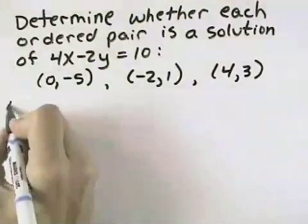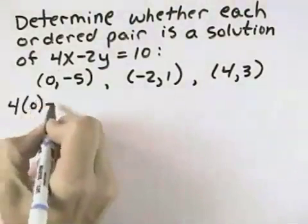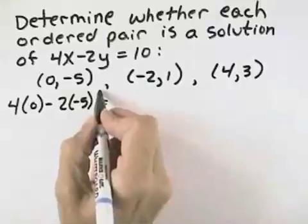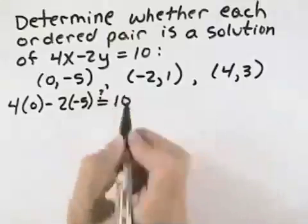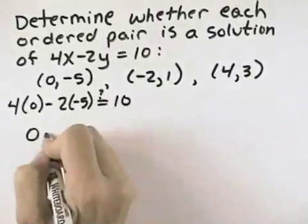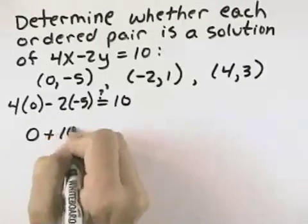So for the first one, we take out the x and we replace it with a zero. We take out the y and we replace it with a negative 5. We want to know, does that equal 10? Well, 4 times 0 is 0. Negative 2 times negative 5 is a positive 10.